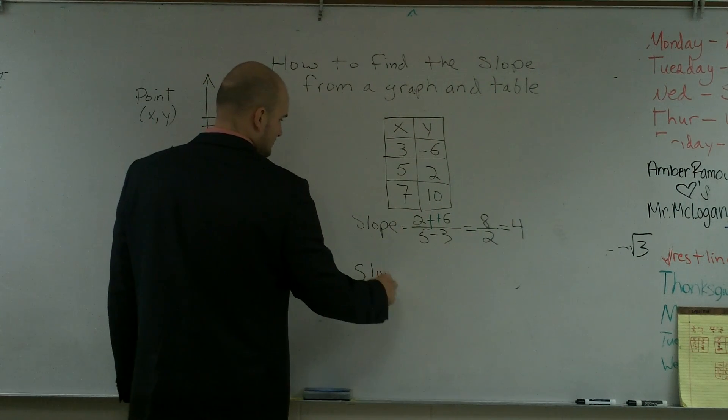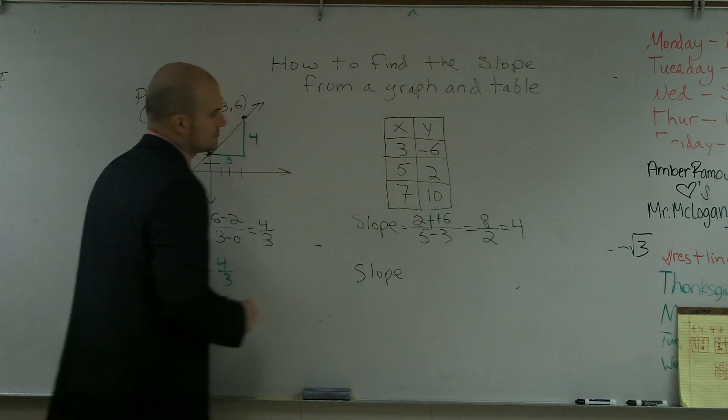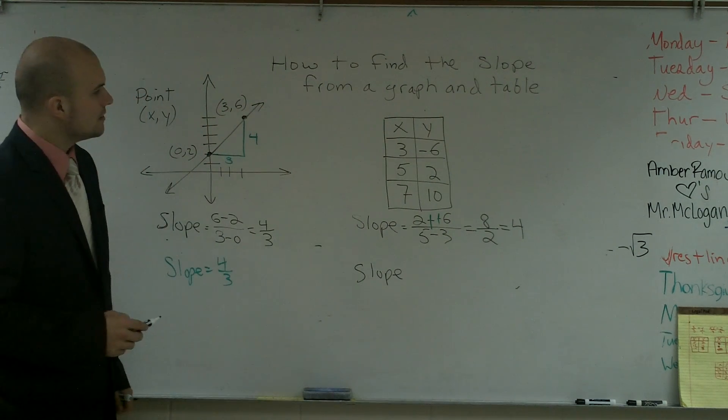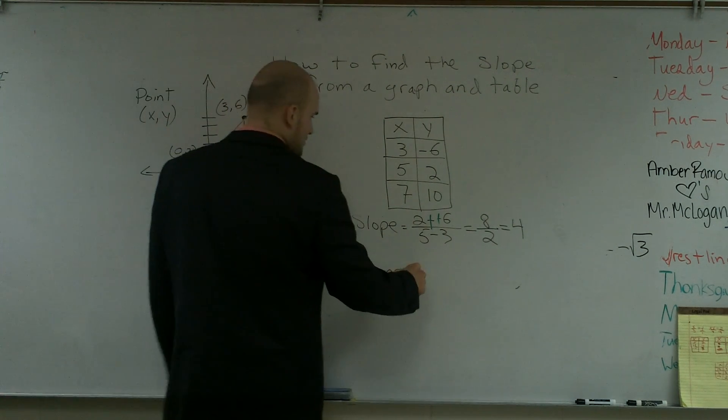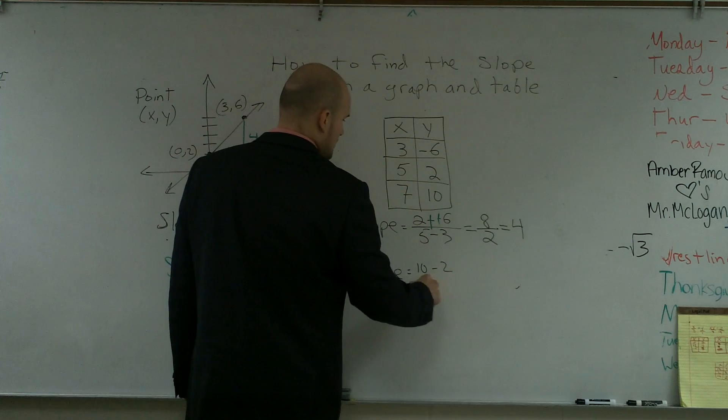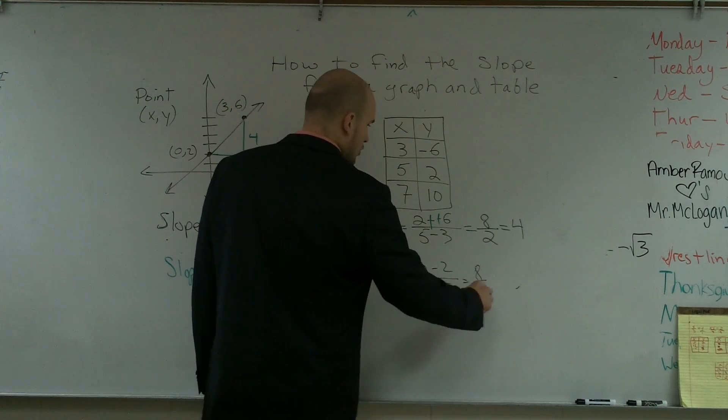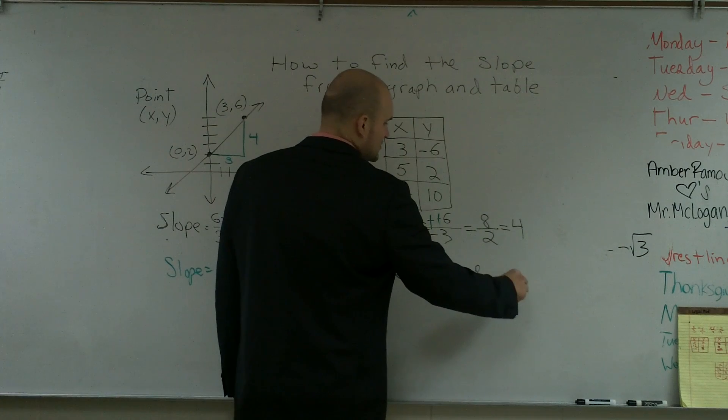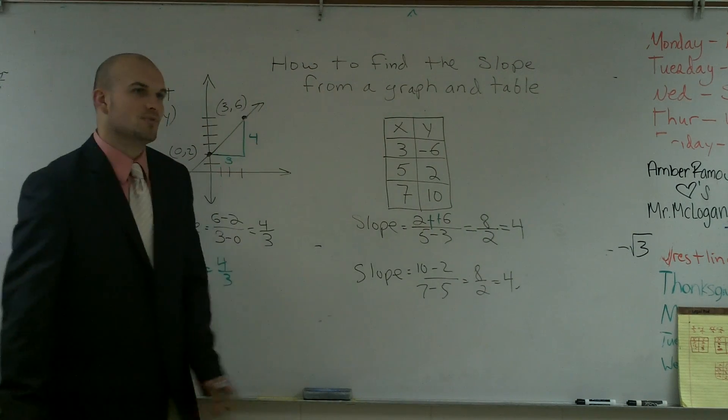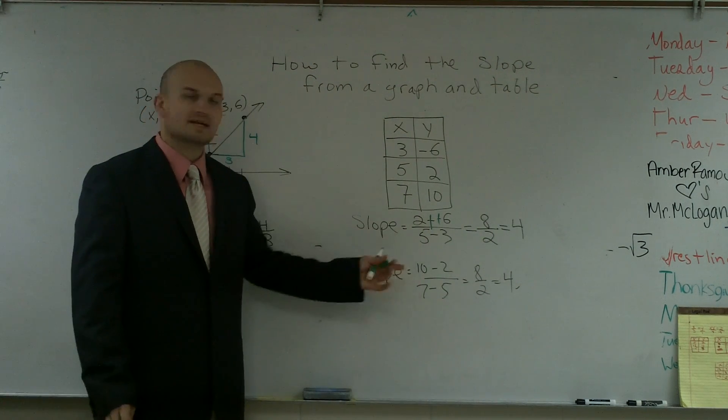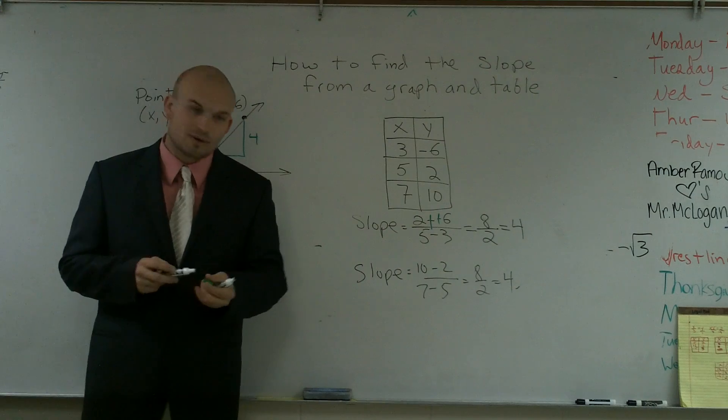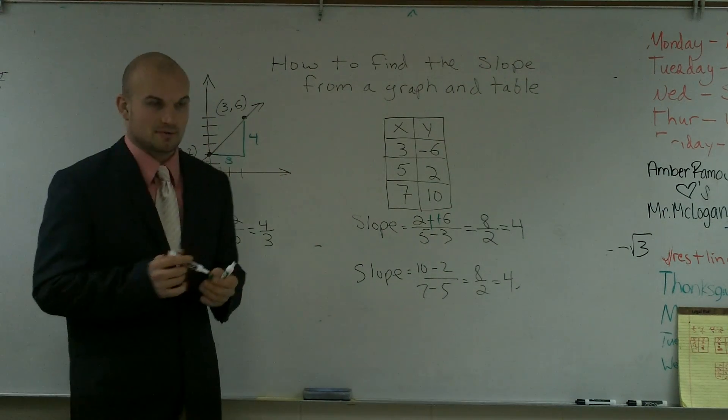I could do 10 minus 2 and 7 minus 5, and what I get is 8 over 2, which equals 4. So it doesn't matter what two points you pick. You're always going to get the same rate as long as it is a linear equation. That's how you find the slope from a graph and a table.